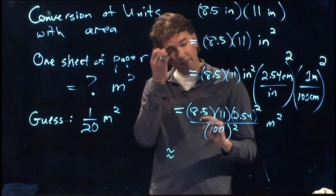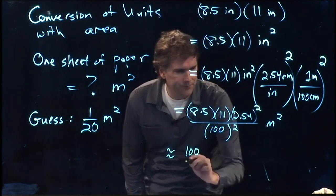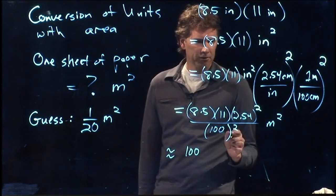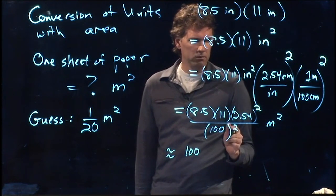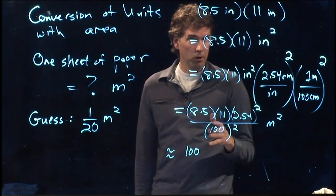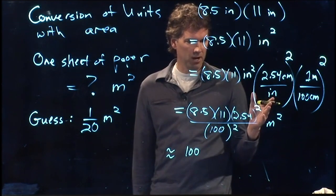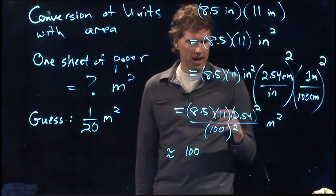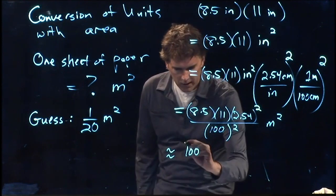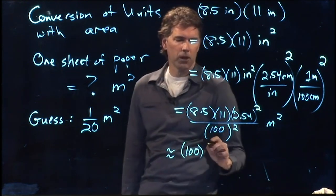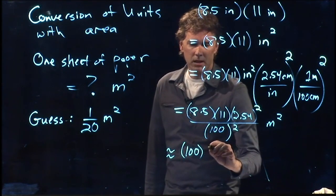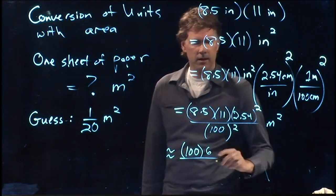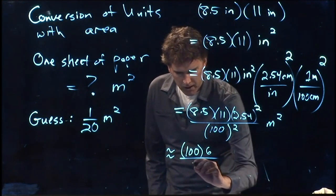So 8.5 times 11. That's got to be close to 100. 2.5 squared is what? Well, 2 squared is 4. 3 squared is 9. And it's not quite halfway in between those. So let's say it is something around, how about 6. And then down at the bottom we have 100 squared.